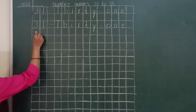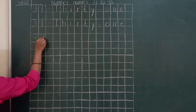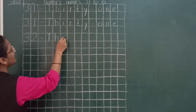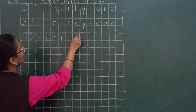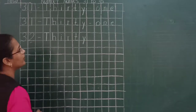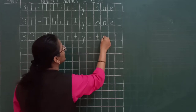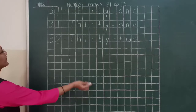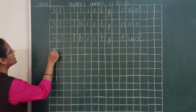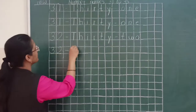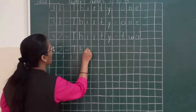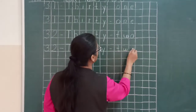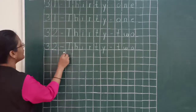Next number — leave a line and write 32. T-H-I-R-T-Y, 30. It is very easy to write. If you know the spelling of number 30, that is T-H-I-R-T-Y, 30, and now the spelling of number 2 is T-W-O, 2. One more time: T-H-I-R-T-Y, 30, and T-W-O, 2. So it is 32. Leave a line in between.